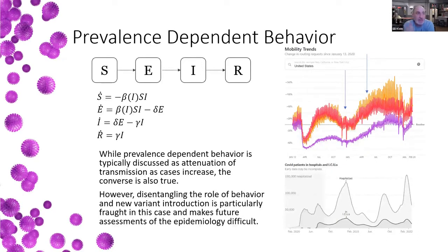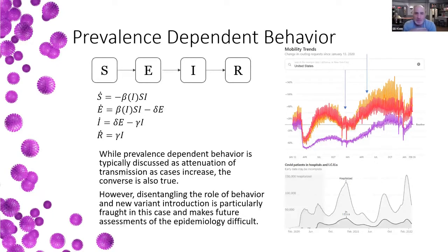Getting back to prevalence-dependent behavior: we typically talk about how as cases rise people change their behavior, but in some ways the more important part as we move towards the end game is that as cases fall, people also change their behavior and start to go back out again. We see that — as cases started to fall at the end of February last year, movement started to go back up. Then in July 2021 when the pandemic was sort of announced as over, everybody started going out again.